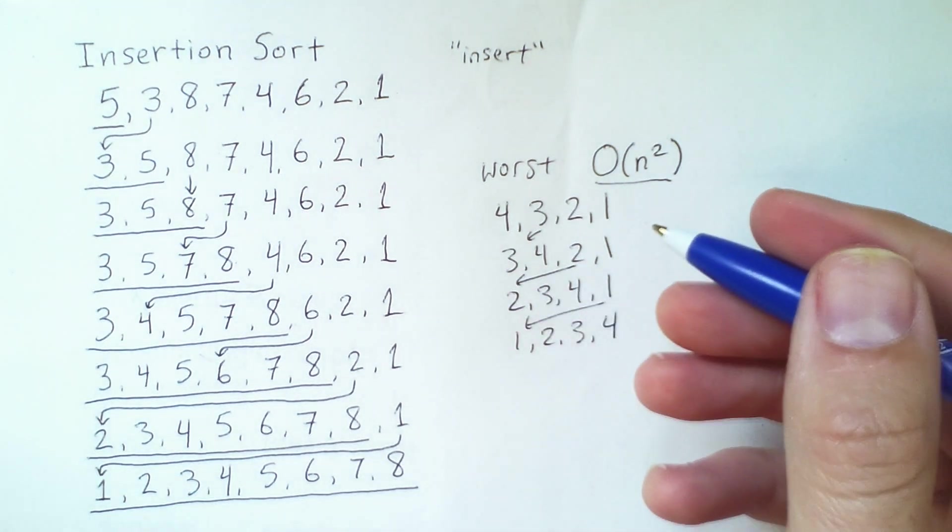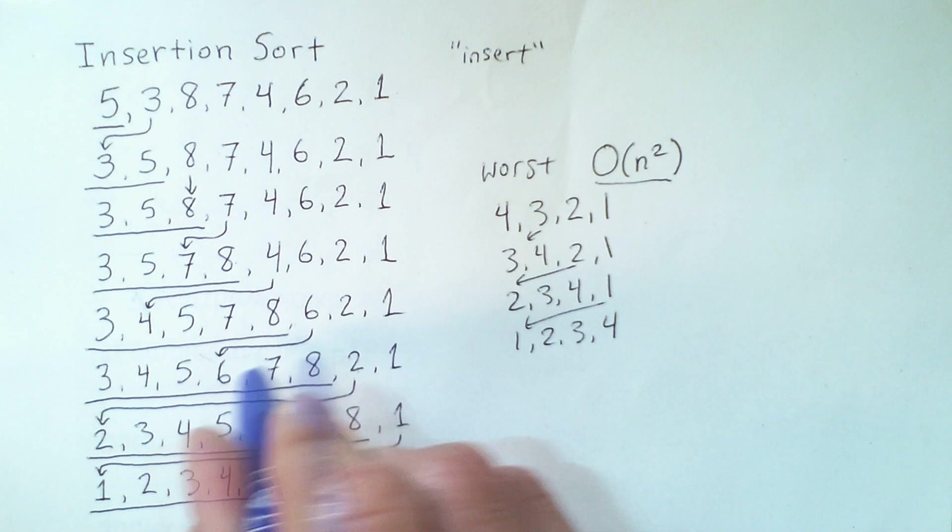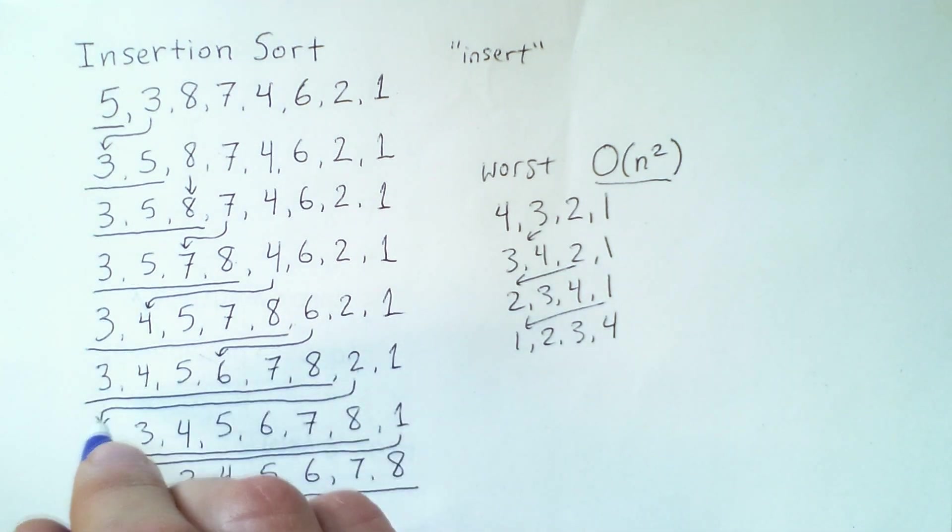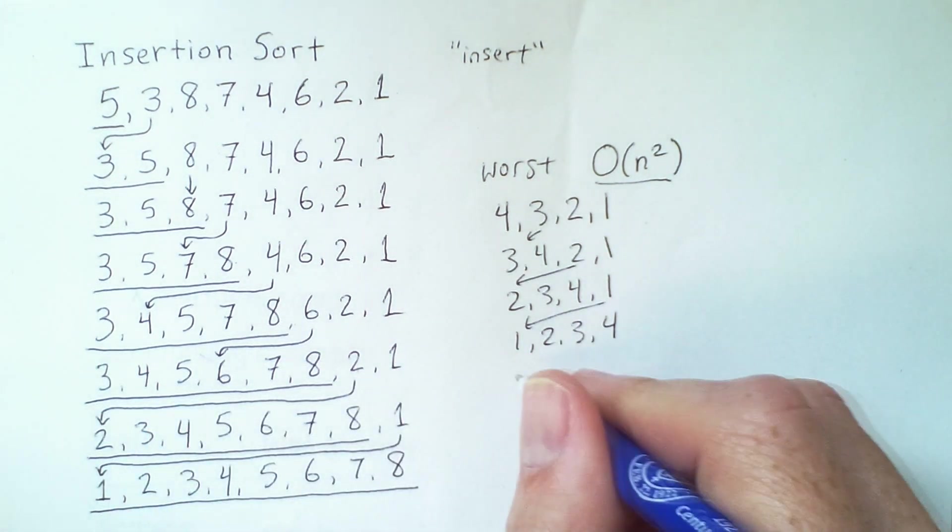Now, on the average case, this is technically also n squared because elements will move often less than the full range back to the beginning. But it averages out to be n squared as well.